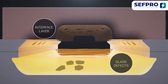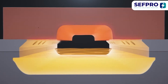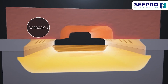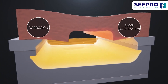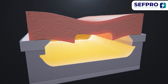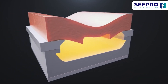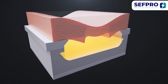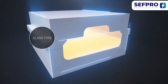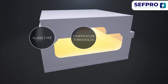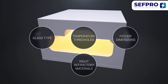High temperatures increase the risk of creeping. They accelerate corrosion and cause block deformation, which might result in the collapse of the entire superstructure. Avoid these detrimental effects by carefully evaluating glass type, temperature thresholds, and feeder dimensions while selecting the right refractory materials.